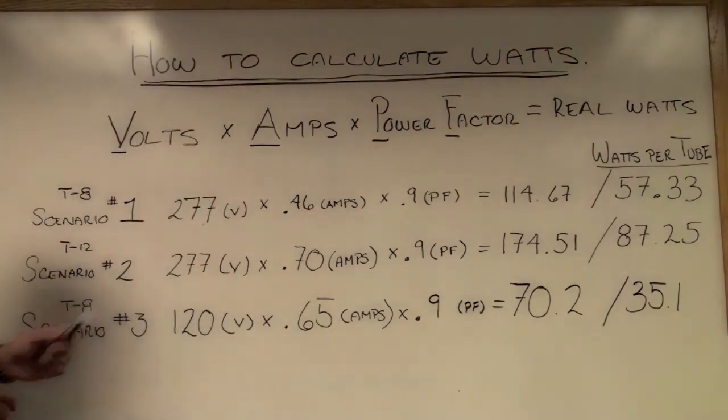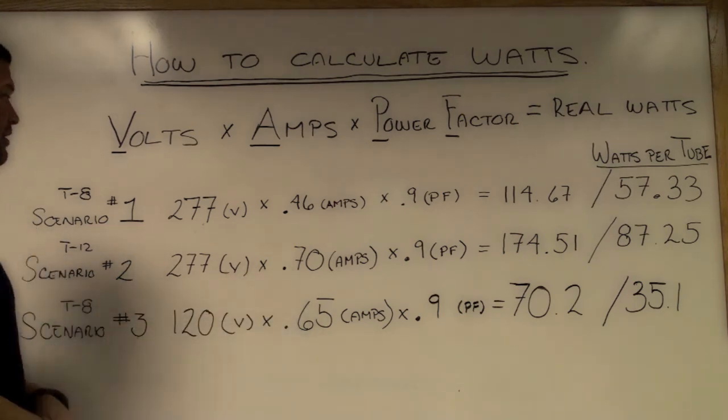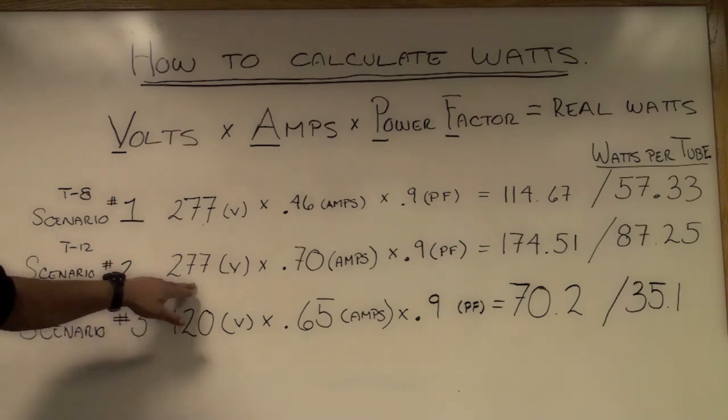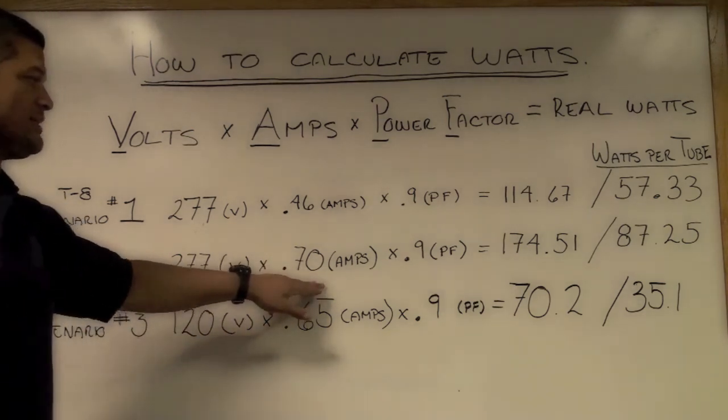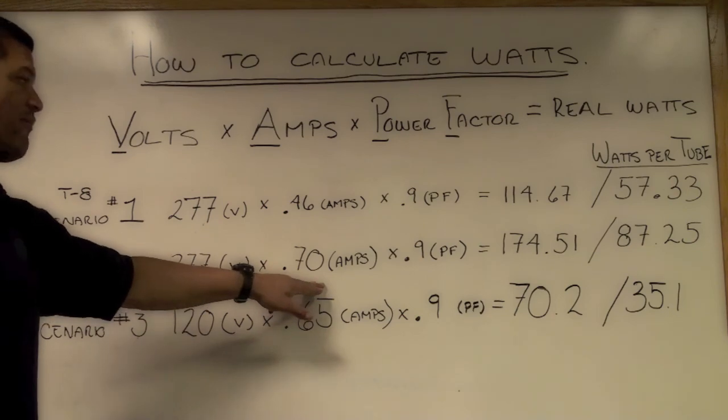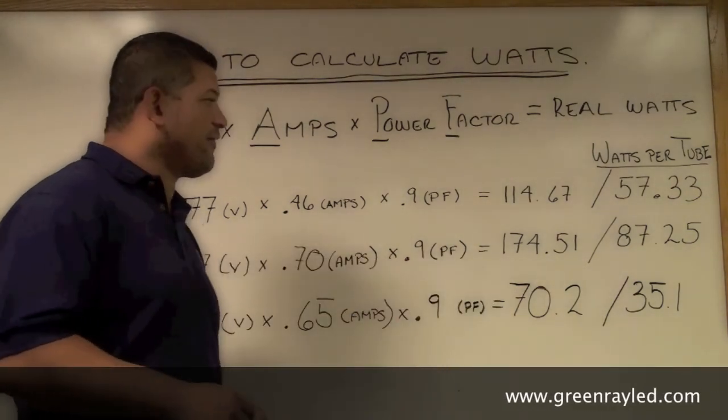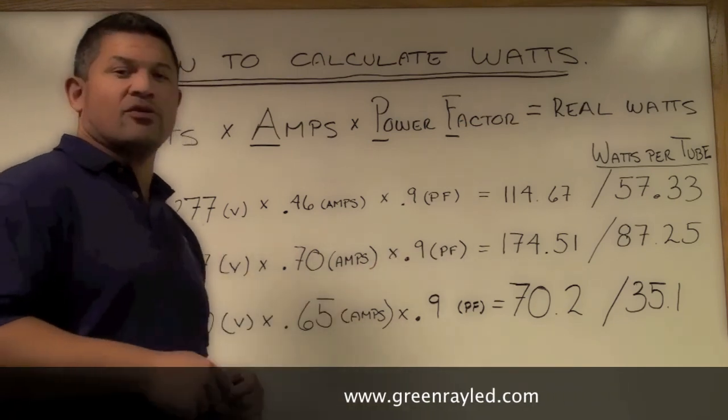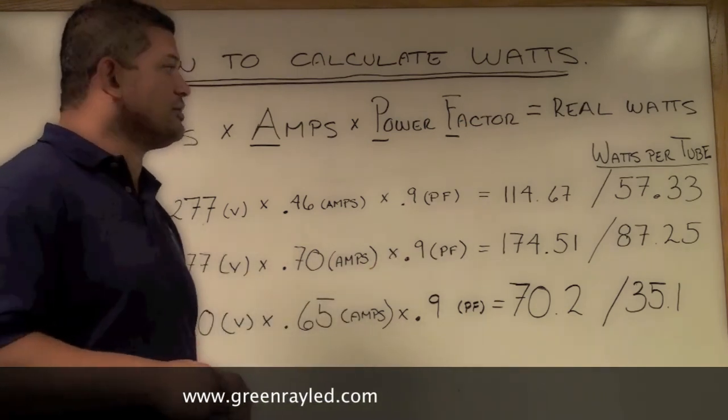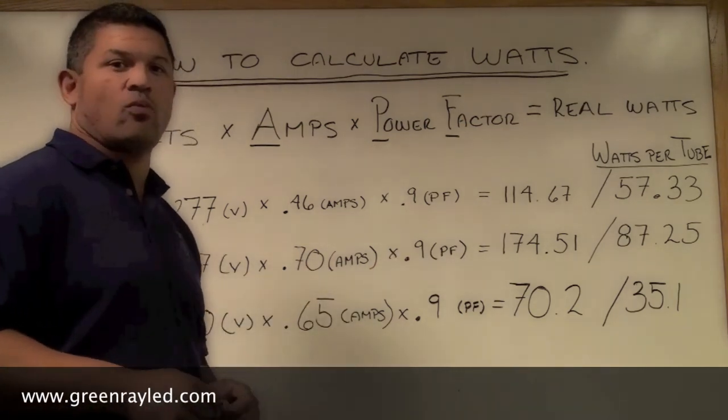The second scenario, and you'll see it on the ballast that I have, is a calculation that we're taking if the amperage went up to 0.7. 277 are the volts that we're using in our lights. 0.7 is the factor for amperage times 0.9 gives you 174.51 and that would bring your calculation per tube to 87.25 watts per tube.